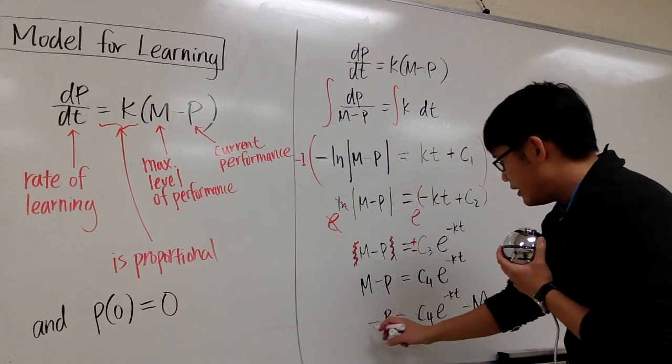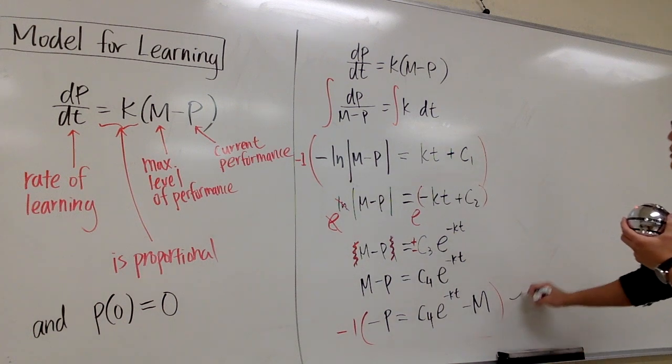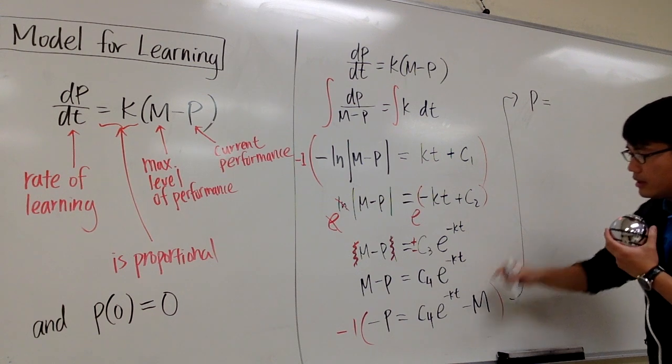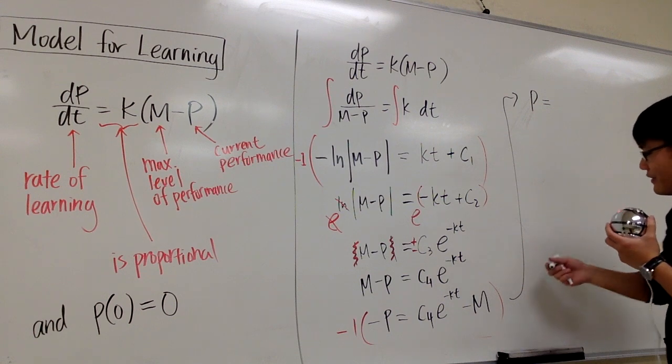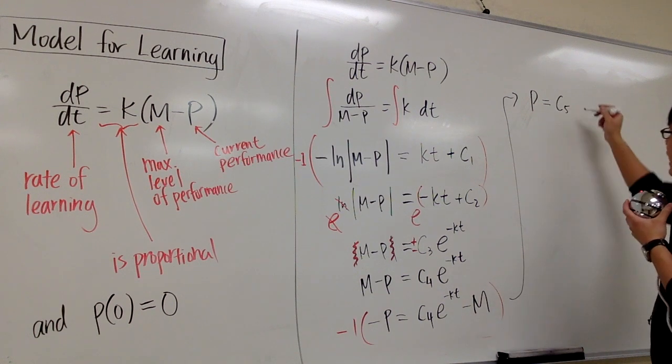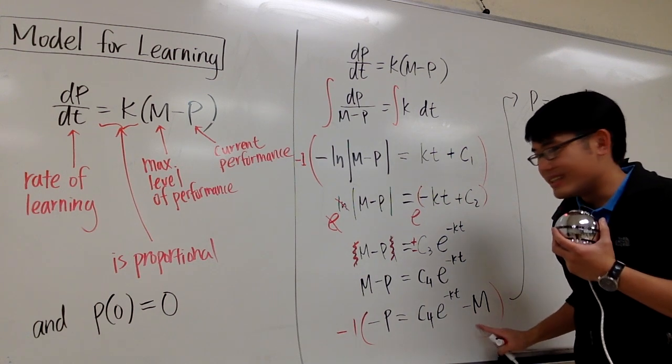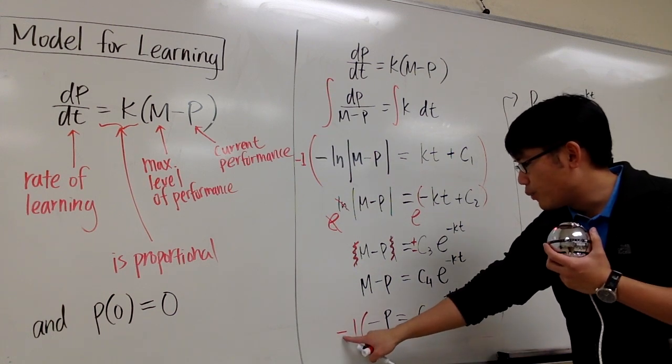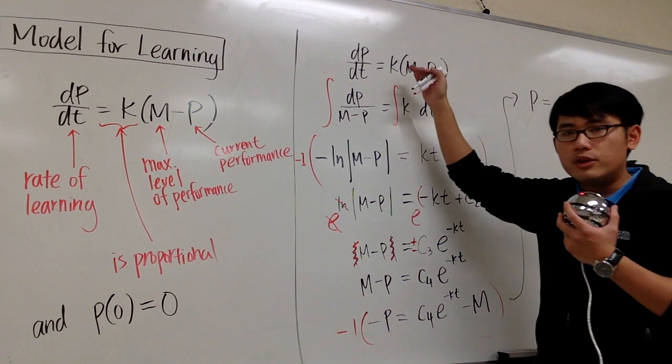And the last touch is that I need to isolate this p, I will multiply everything by negative 1. So, as you can see, we will end up with positive p, and this will be negative 1 times c4, which is like c5. c5 e to the negative kt, but the m was preset, so we will have to keep it as m, I cannot call that m2 or anything. I will just write it as negative 1 times negative m, which is plus m. And I'm done, because this is the general solution to this differential equation.